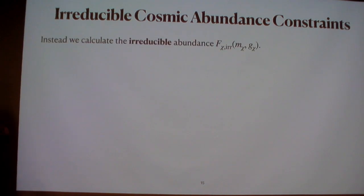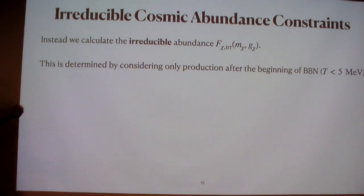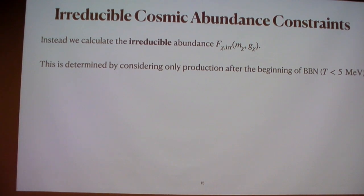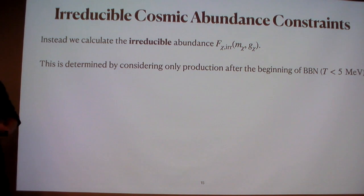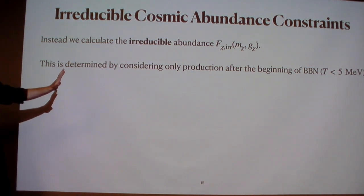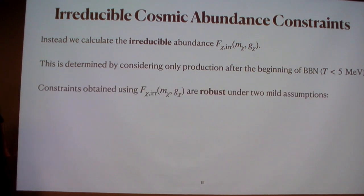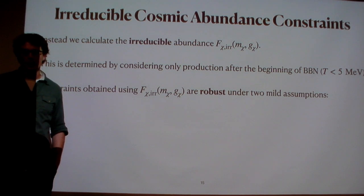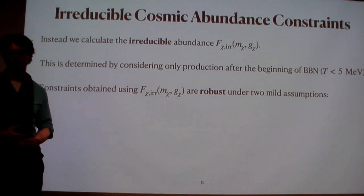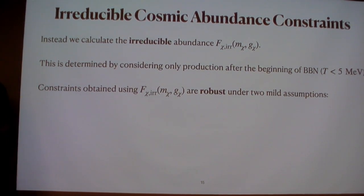We can get a strong constraint using the irreducible abundance of particle chi — the abundance assuming it's only produced from the thermal plasma after the beginning of BBN. We can constrain the universe to be radiation-dominated back to a temperature of about 5 MeV, but before that we know nothing. It could be matter-dominated, domain-wall-dominated, many different cosmologies. I don't care about the history before BBN; I assume the universe is radiation-dominated for all temperatures below 5 MeV. So the production is from the thermal plasma non-thermally — freeze-in, which is technically non-thermal.